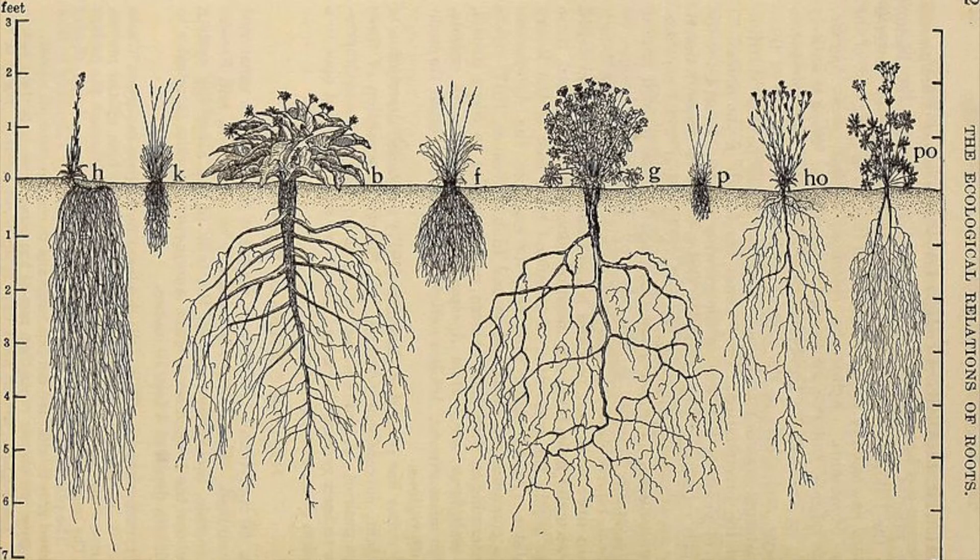The final factor that led to the Dust Bowl was the farming economy. From 1910 to 1920, wheat prices were on the rise because of World War I, encouraging farmers to plow millions of acres of native grasslands to plant more crops. But when the Great Depression hit, the price of wheat plummeted and farmers tore up even more grasslands in an attempt to harvest enough to break even. Without the deep roots of the prairie grass there to hold the soil down, it began to blow away with the wind, causing huge dust storms.